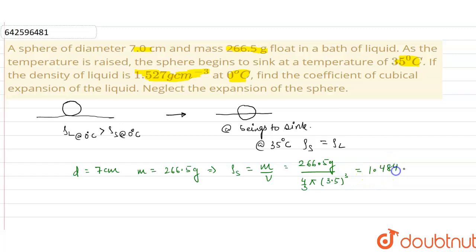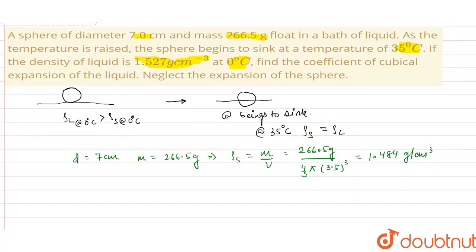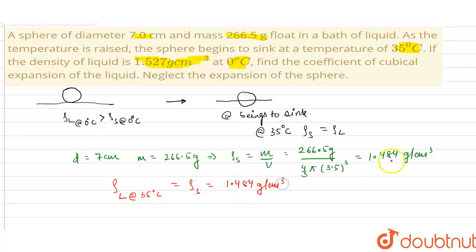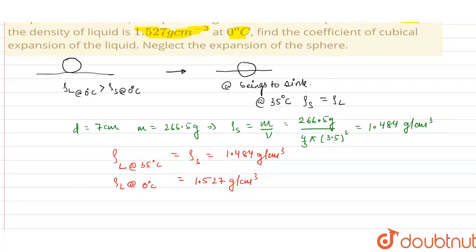From our concept, the density of the liquid at 35 degrees Celsius equals the density of the sphere, which is 1.484 gram per centimeter cube. The density of the liquid at 0 degrees Celsius is given as 1.527 gram per centimeter cube. Now we need to calculate the coefficient of cubical expansion.